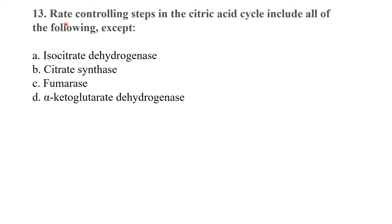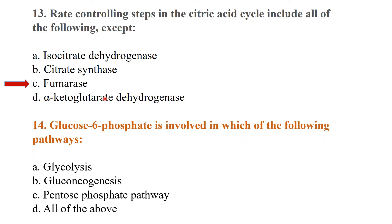The rate-controlling steps in the citric acid cycle include all of the following except fumarase — fumarase is not a rate-controlling step. Glucose-6-phosphate is involved in which of the following pathways? The answer is all of the above — glucose-6-phosphate is involved in all the listed pathways.